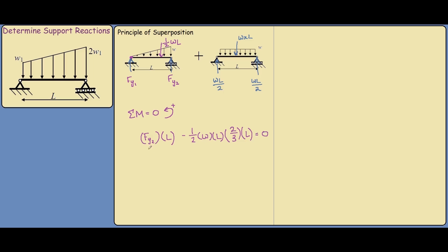Now we can solve this for Fy2. Fy2 times L equals, bringing everything to the right-hand side, one-third WL squared. So Fy2 equals one-third WL if you divide both sides by L. So we've found one support reaction.